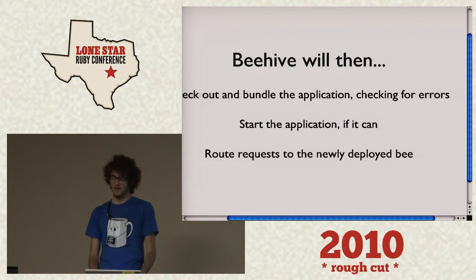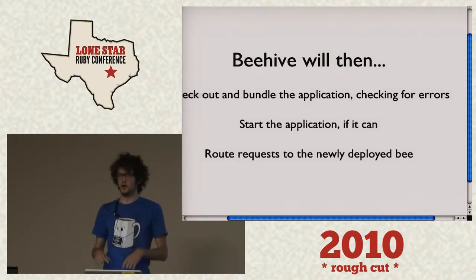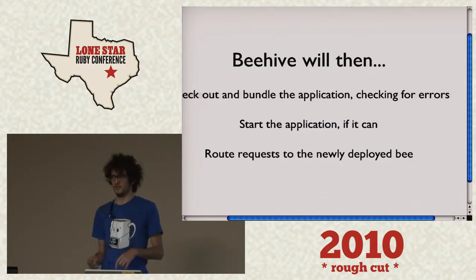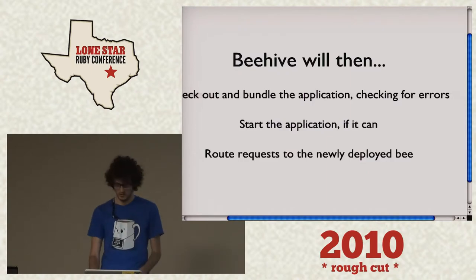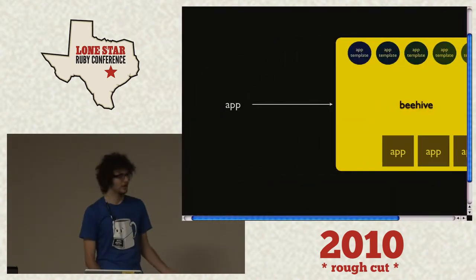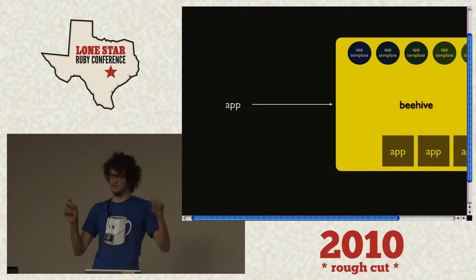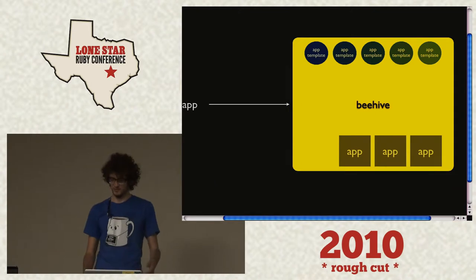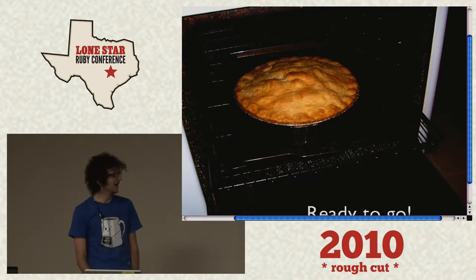It will try to start the application; if that fails, it will let you know. It's pretty communicative as a tool. Remember I said it was an intelligent router? So all the requests that come into the router are held for a specific amount of time — a timeout. When the bees start up, that router will say, OK, now I can start routing requests to that application, or that bee, if you will. And then you're ready to go.